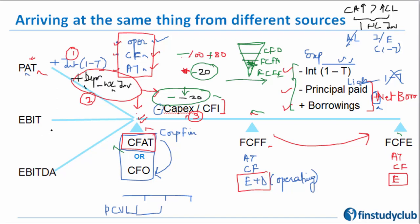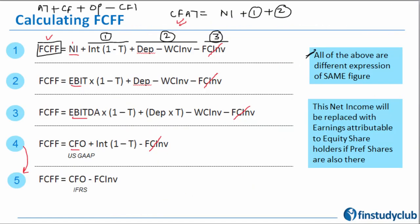Starting from EBIT: keep three parameters in mind — operational, cash flow, after-tax. Is EBIT after-tax? No — EBIT is before tax, so multiply by (1 minus T). Is it operational? Yes — EBIT is called operating profit, so no non-operating elements have been deducted; no need to add back interest. Is it cash? No — it's accrual. So adjust by adding back depreciation and subtracting working capital investment to arrive at CFAT, then deduct CFI to get FCFF.